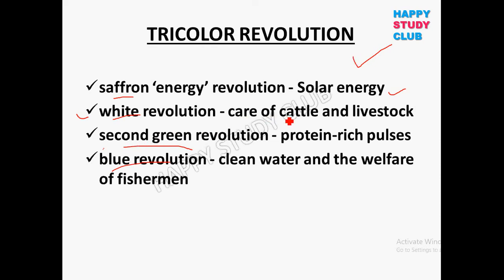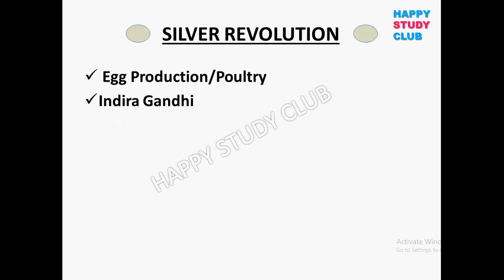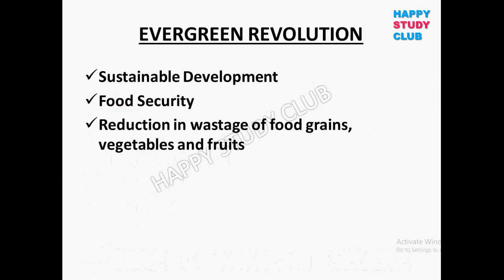Don't get confused between the White Revolution for milk production studied earlier and the White Revolution under the Tricolor Revolution, which is related to cattle and livestock welfare. The third color — green — represents the Second Green Revolution, which is about protein-rich pulses. The Blue Revolution under the Tricolor Revolution is related to clean water and the welfare of fishermen, with blue representing the Ashoka Chakra in our flag.